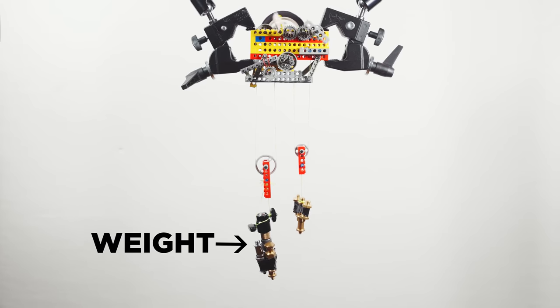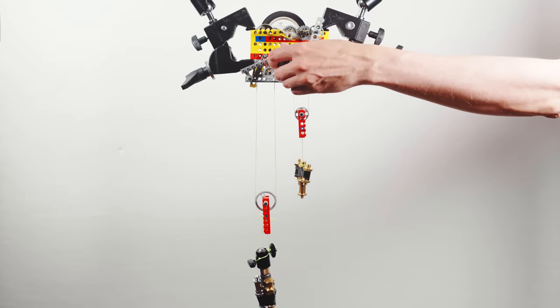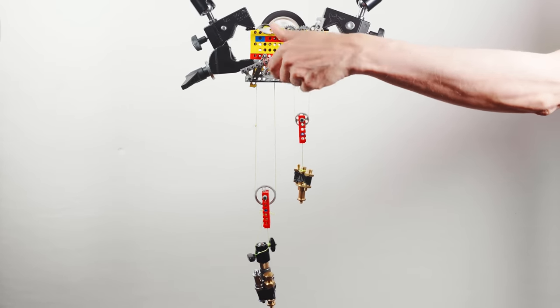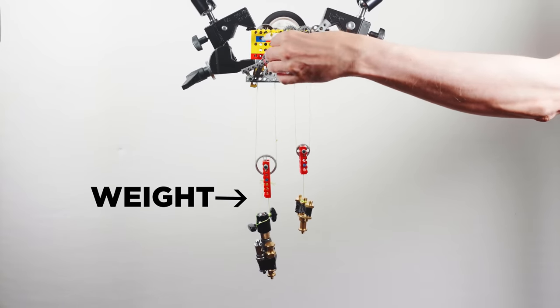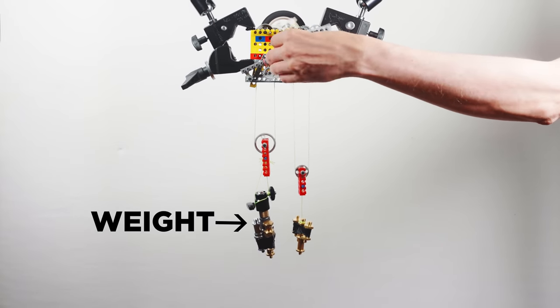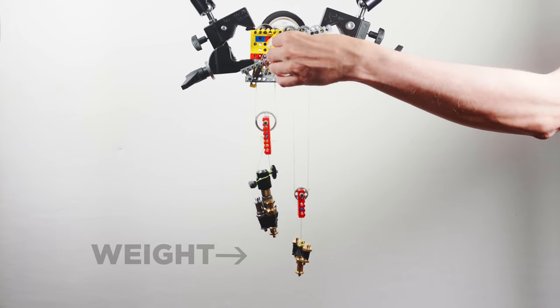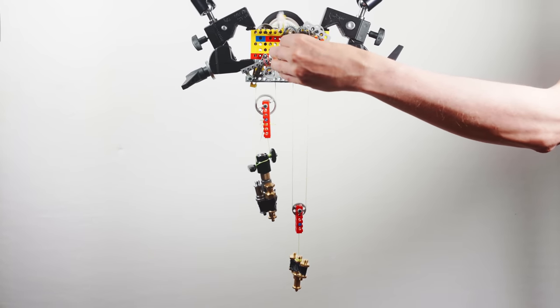But this is not any old weight drive, it has a trick up its sleeve. By turning the ratchet you can raise the falling weight up during operation. Even when I'm turning, the weight is still powering the machine. This makes this weight drive continuous. It can continuously power a rotary motion as long as you input new power into the system through the ratchet.